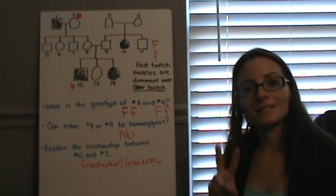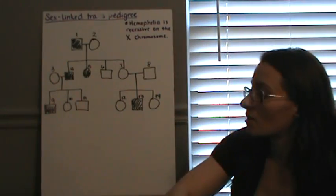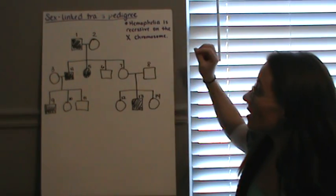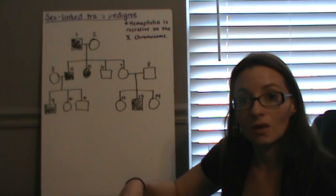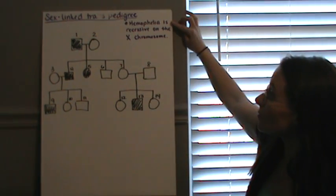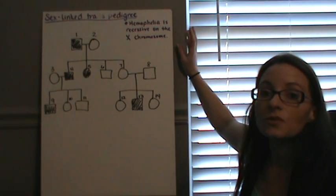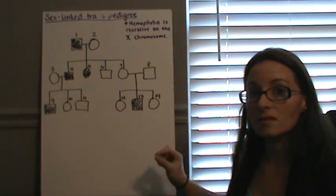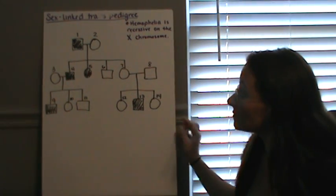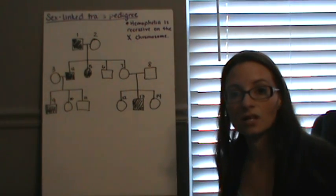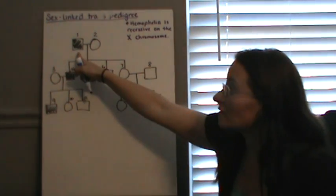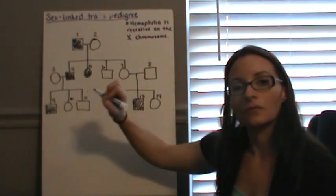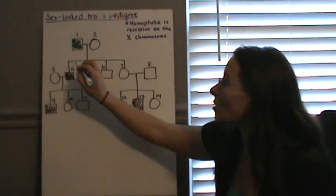So we're going to take a look at a second pedigree chart. This one includes sex-linked traits. A sex-linked traits pedigree — remember, it's on the X chromosome — and for this one in particular, hemophilia is recessive and on the X chromosome. So that means males are going to be more susceptible than females are. So I'm going to start going through and putting genotypes underneath for what we can figure out.